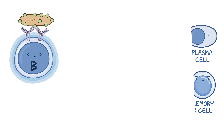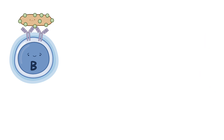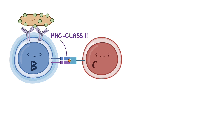Once activated, the B cell internalizes the antigen and presents a piece of it on a major histocompatibility complex class II molecule, or MHC class II. At some point, a CD4-positive helper T cell binds to the presented antigen. When this interaction occurs, the T cell expresses a protein called CD40 ligand on its surface, which binds to the CD40 receptor on the B cell.